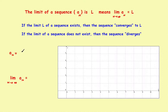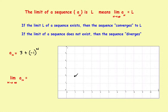Now suppose we had a sequence that alternates or oscillates between terms: 3 plus (−1)^N. Anytime you have (−1)^N, it just switches back and forth between +1 and −1. If N is even, you get +1; if N is odd, you get −1. So when N=1, you get 3−1=2; when N=2, you get 3+1=4; when N=3, back to 2; when N=4, back to 4 — continuing this pattern between 2 and 4.